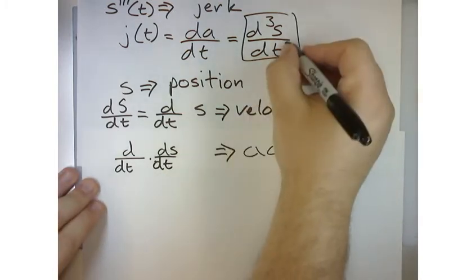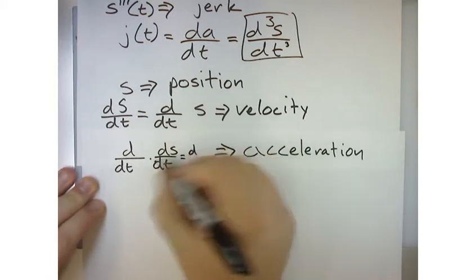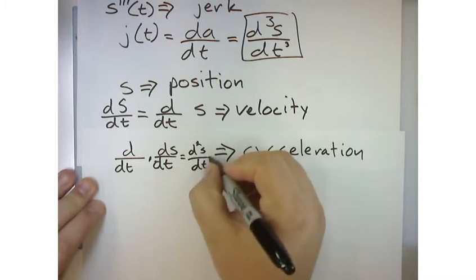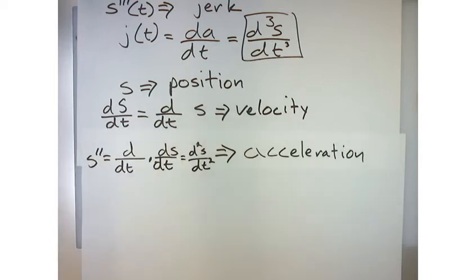I forgot to write this down here. So this would then become d t squared s over d t squared. Now remember, that's just s double prime, right? Where this is s prime.